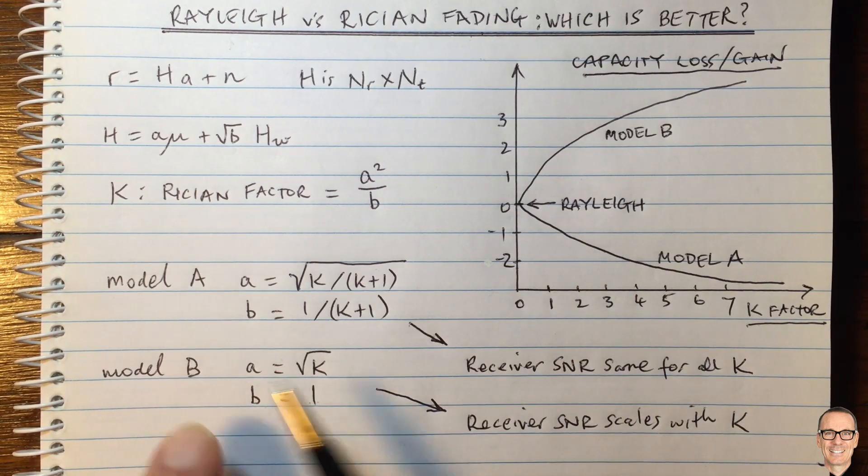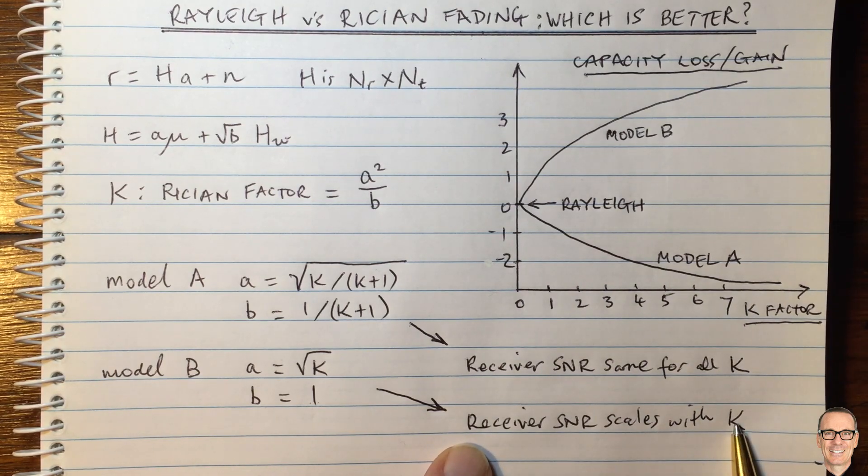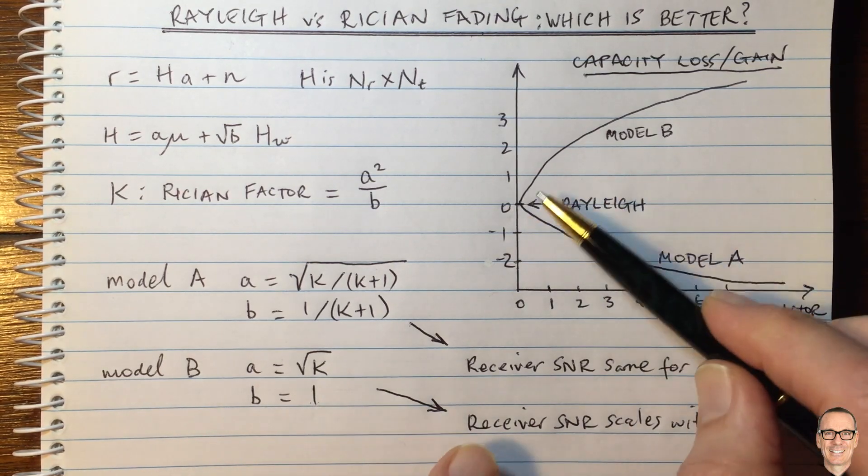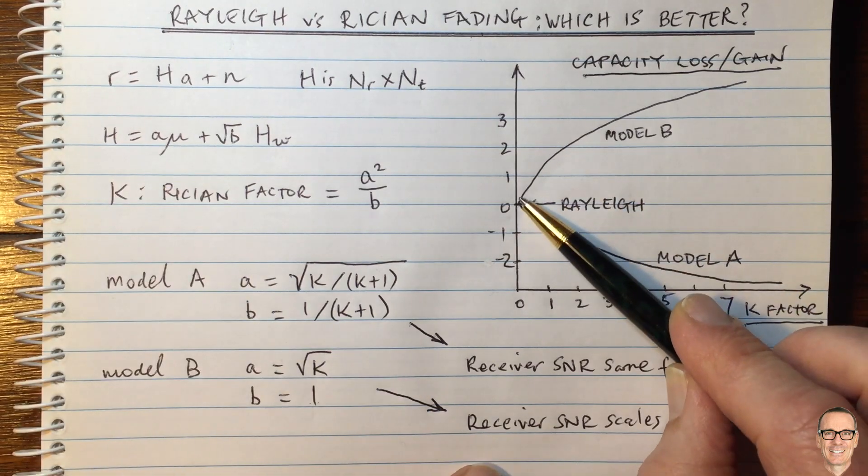But if you're looking at model B, as you increase the K factor, the SNR scales with the K factor. The power in the reflective path stays the same, B equals one, and the power in the main direct path increases.